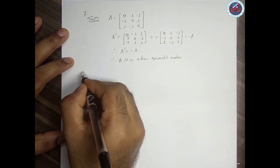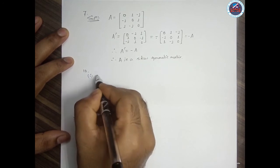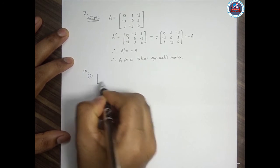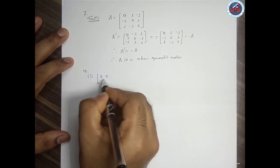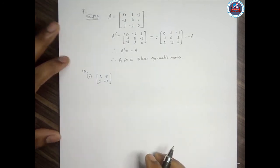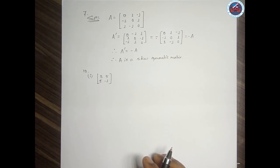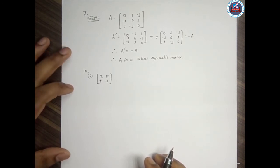Now let us see question number 10, which is a very important one. There is a theorem that every matrix can be expressed as a sum of a symmetric and a skew symmetric matrix. Let A = [3, 5; 1, -1].